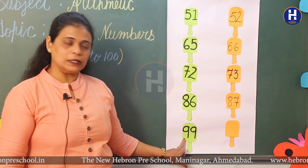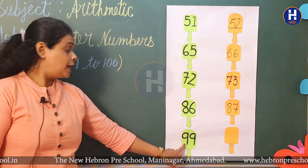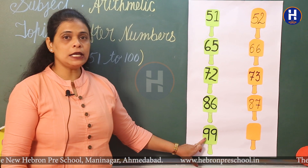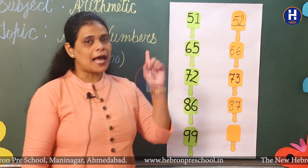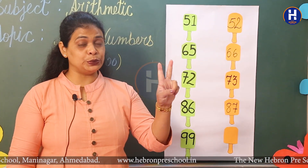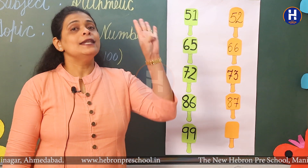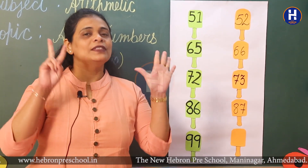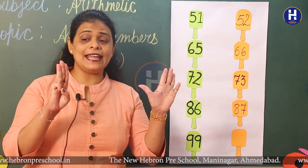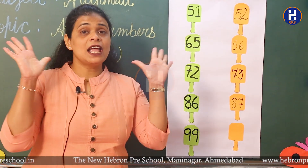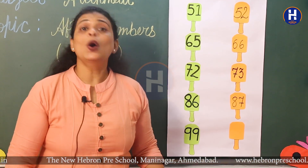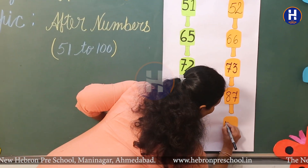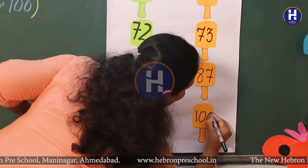Now go to the last number. Which number is this? 99. So let's start forward counting from number 91: 91, 92, 93, 94, 95, 96, 97, 98, 99 and 100. So what comes after 99? 100.